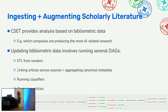Our most complex pipeline is our scholarly literature pipeline, which backs tools like the Map of Science and supports analysis like which companies are producing the most AI-related research. To produce that data we run a number of DAGs: ETL from data vendors providing articles and metadata, linking articles across sources to avoid duplication, aggregating canonical metadata, running classifiers for topics of interest, and clustering the articles. This is just a subset of our scholarly literature workflow.